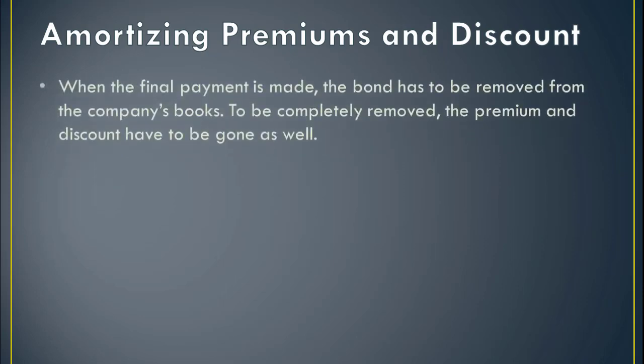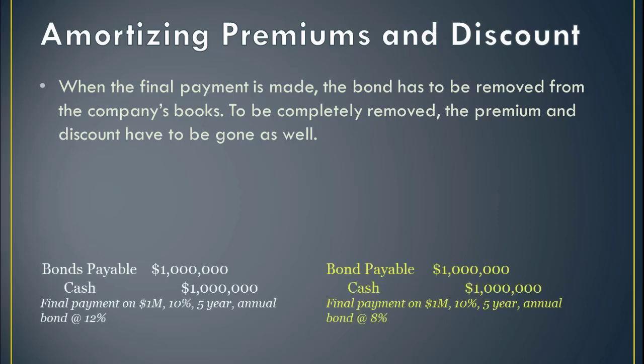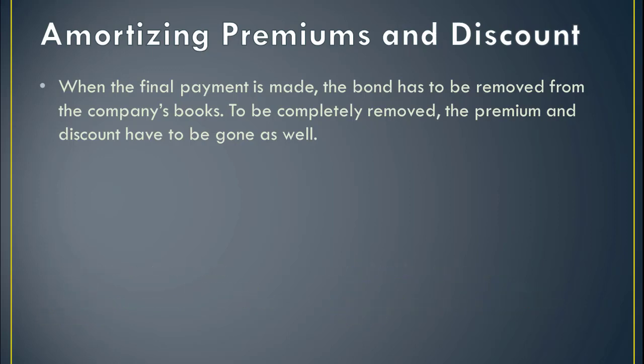The basic idea is that when the final payment is made, the bond has to be completely removed from the company's books. That can't happen if there's still a premium or discount on the books for that bond. So remember — I'm going to make that final payment on, say, a $1 million bond payable, pay out a million dollars, and that premium or discount has got to be gone before I make that payment. So we've got to get rid of it somehow.